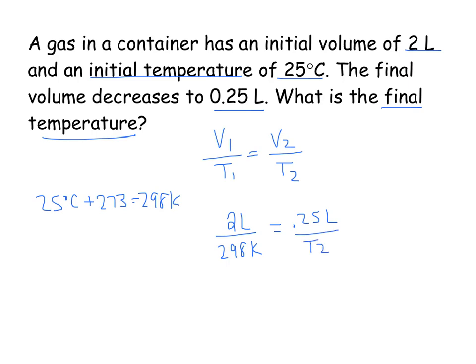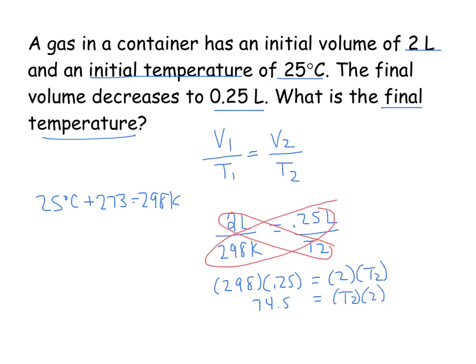So I'm going to cross multiply here. Acknowledging that units are there, but just for the sake of space, it's going to be 298 times 0.25 equals 2 times T2. 298 times 0.25 is 74.5 equals 2 times T2. So I'm going to divide both sides by 2.